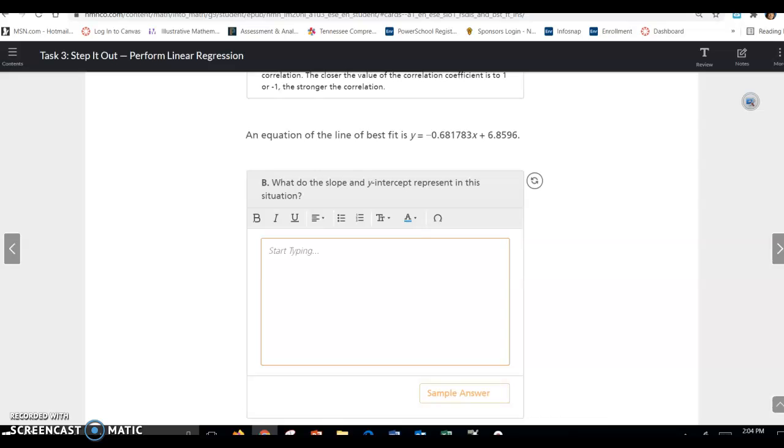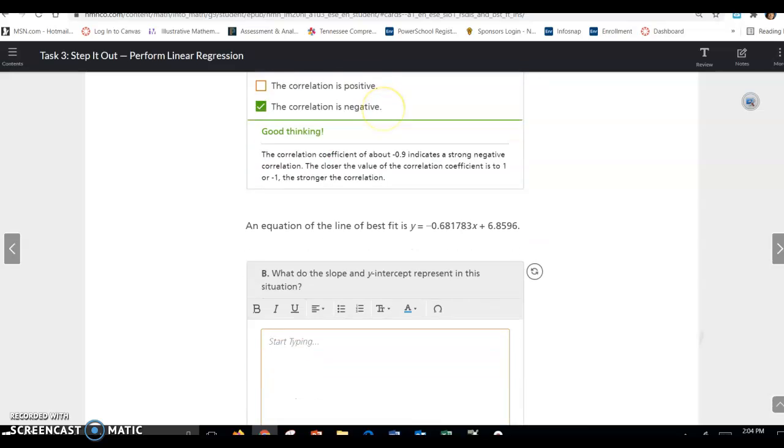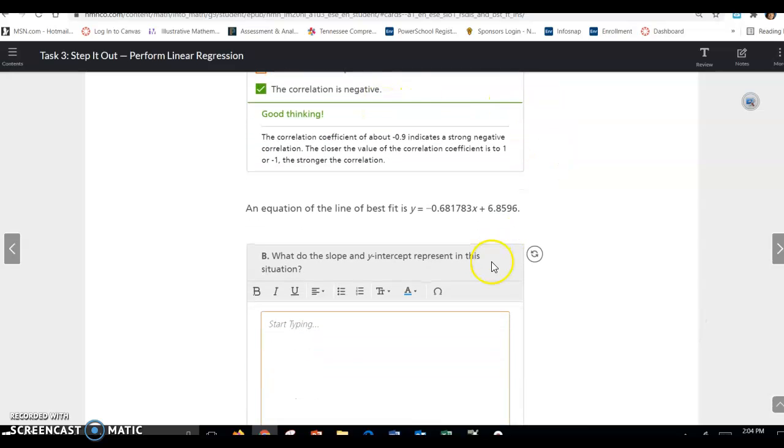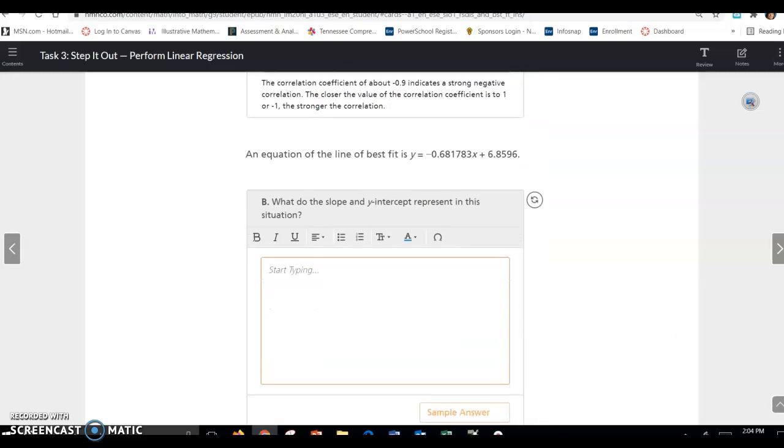An equation of the line of best fit is given here. And it says, what do the slope and Y-intercept represent in this situation? The slope is negative. So if the slope is negative, it's showing us that the more time spent on a screen, the less active we are. And the Y-intercept shows when there's zero screen time, that's how many hours of fitness per week that you do.